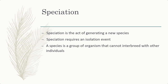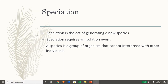Speciation requires an isolating event, because biologically speaking, when we define species, we define them as a group of organisms that cannot interbreed with other individuals. So when species cannot interbreed with one another, they're two distinct species — but that should be presented with a caveat.